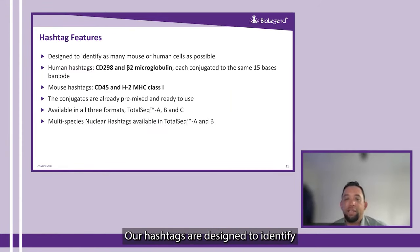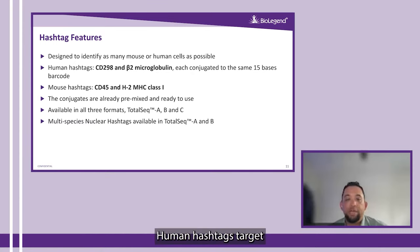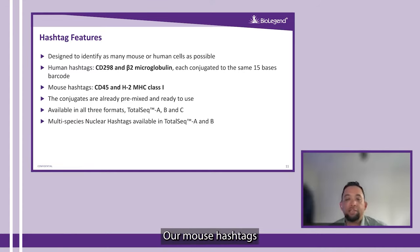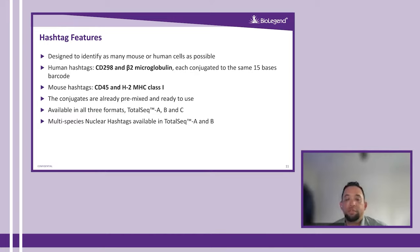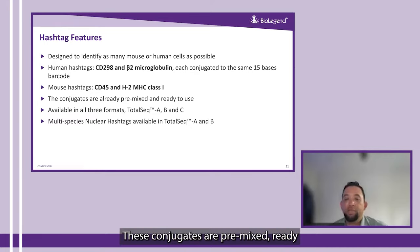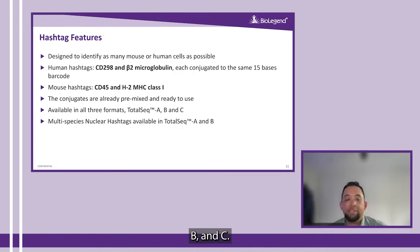Our hashtags are designed to identify as many mouse or human cells as possible. Human hashtags target CD298 and beta-2 microglobulin. Our mouse hashtags recognize CD45 and class 1 molecules. These conjugates are premixed, ready to use, and available in formats A, B, and C.